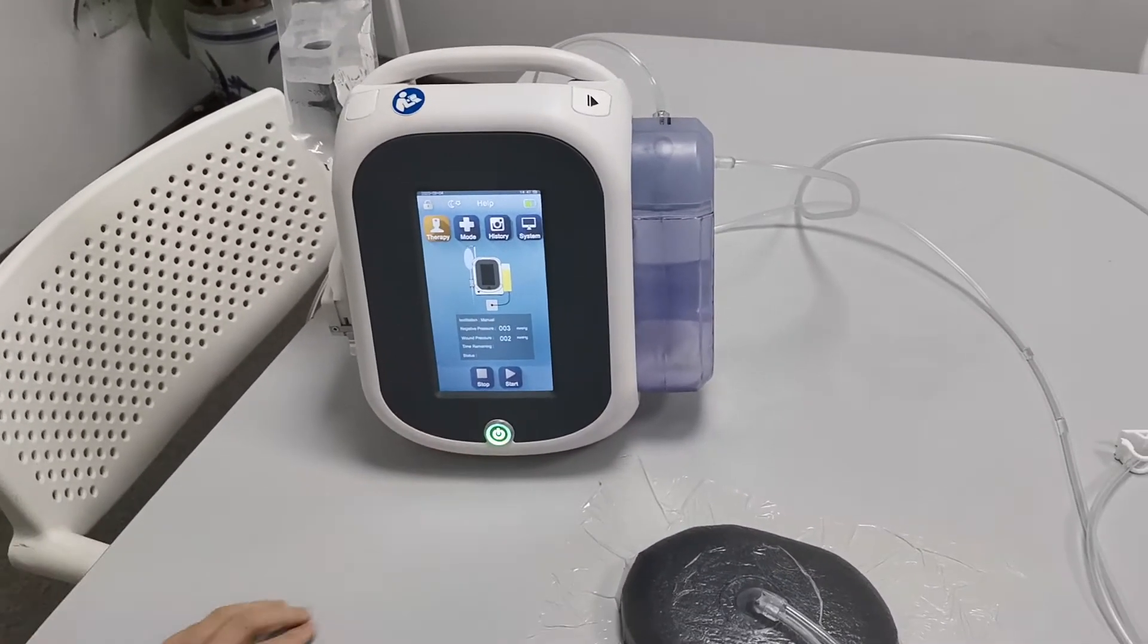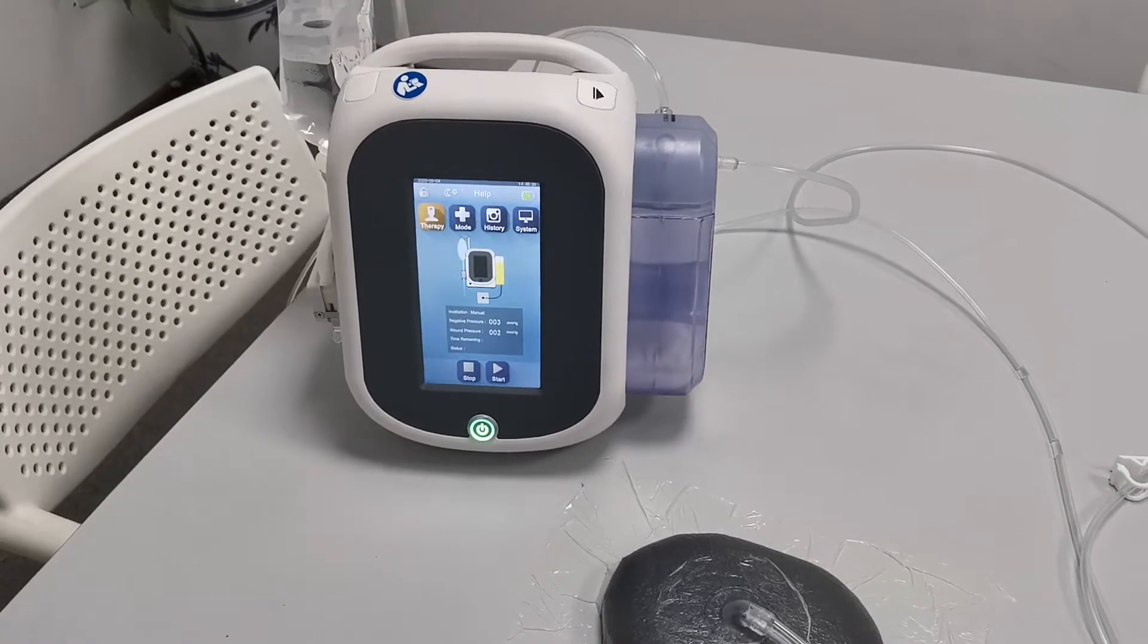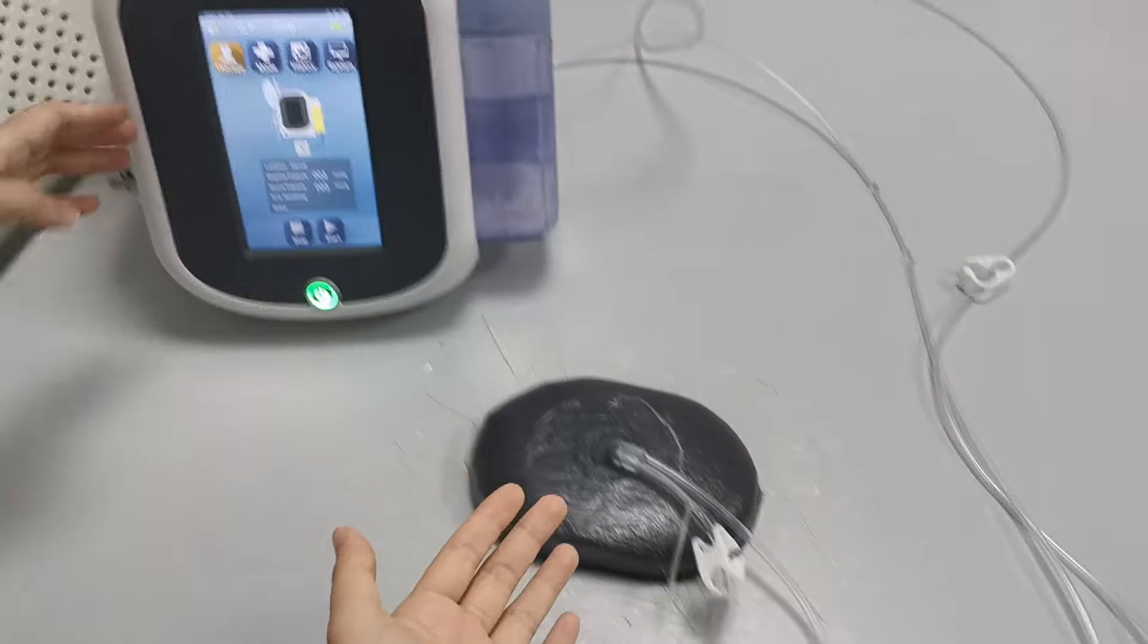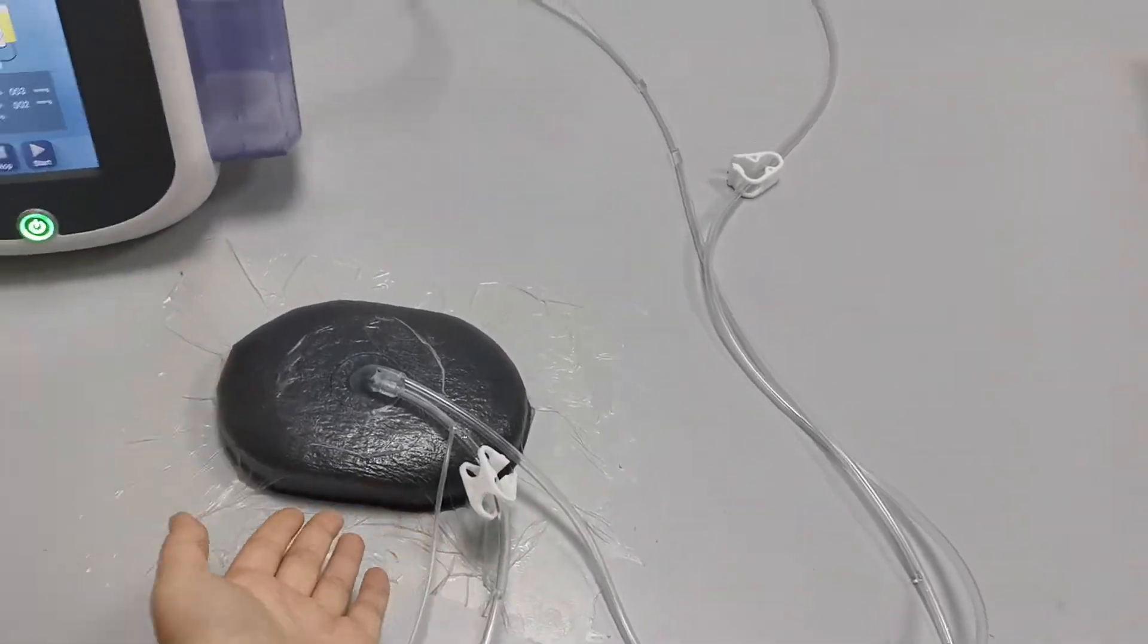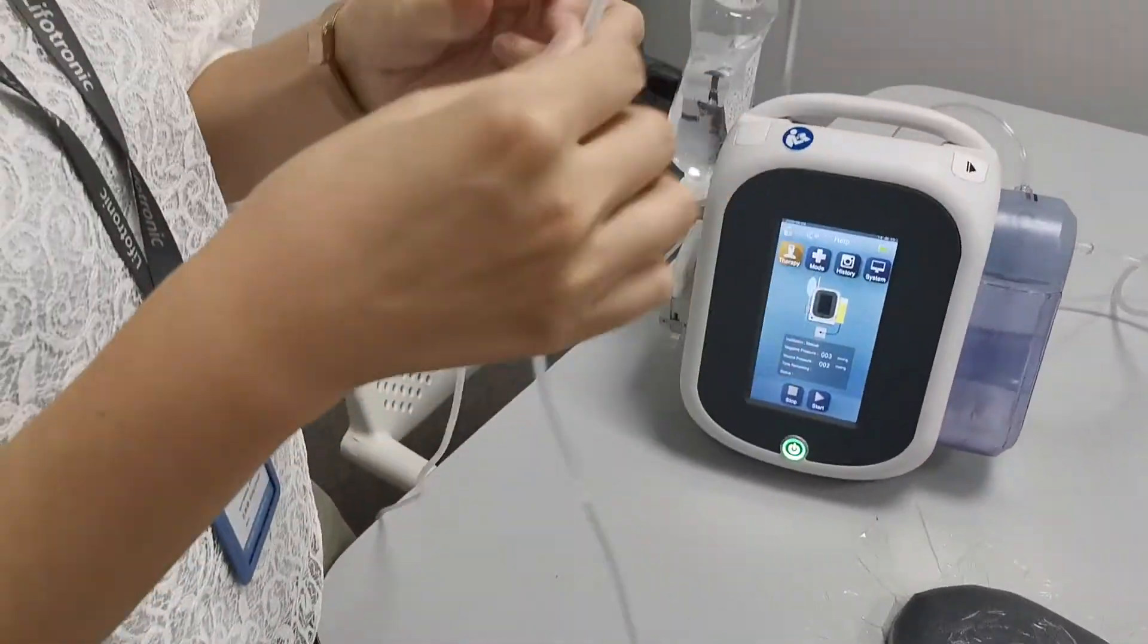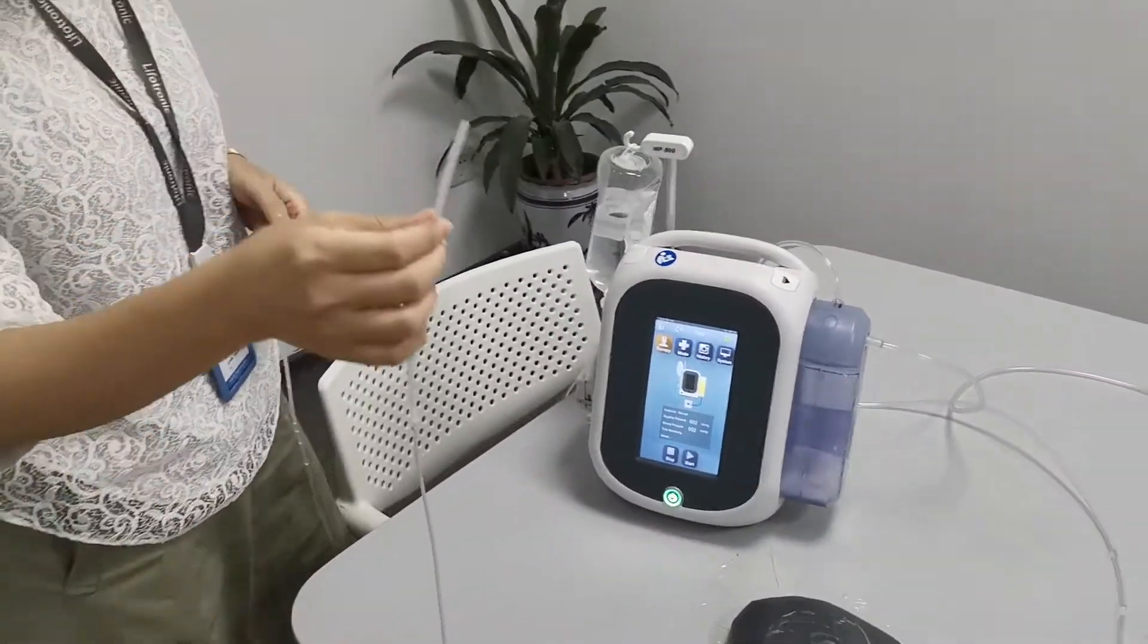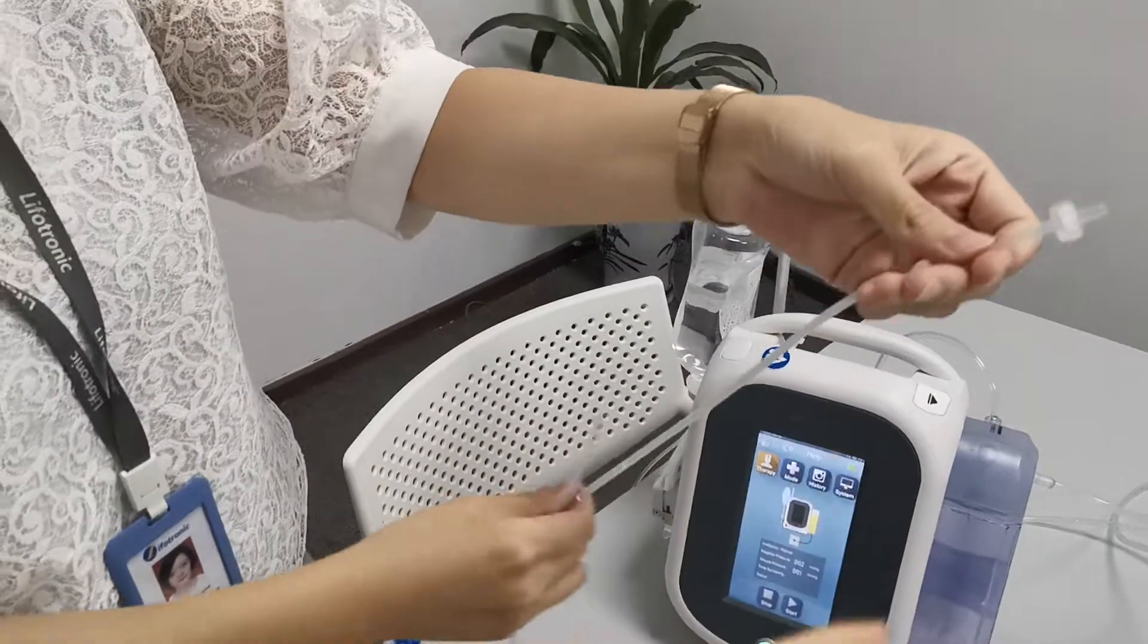So for today, we're only going to do the installation function. This is the saline, our device, and this is our black dressing. So first of all, we need to connect the installation tube and then the infusion tube.